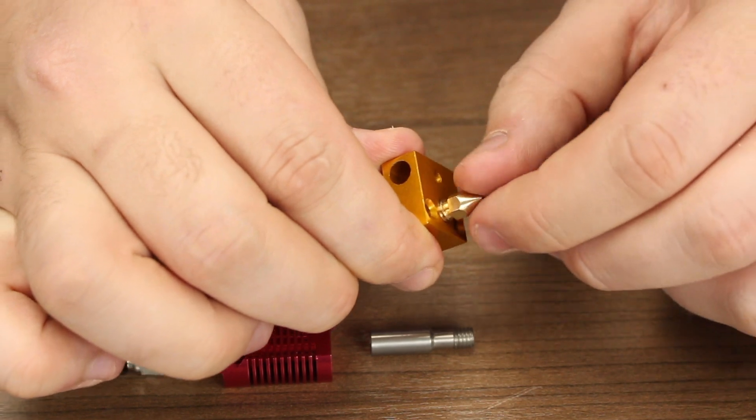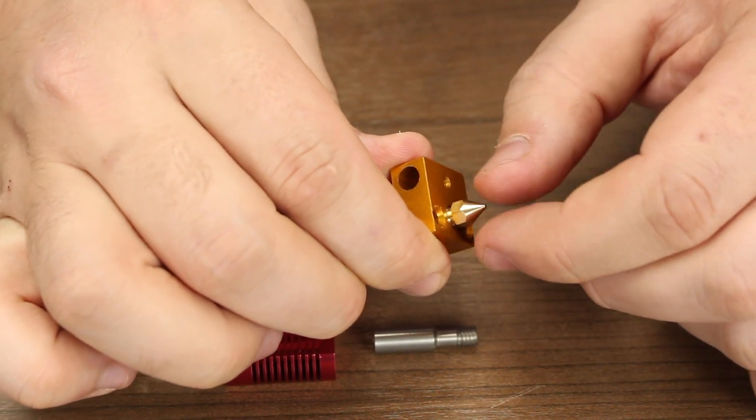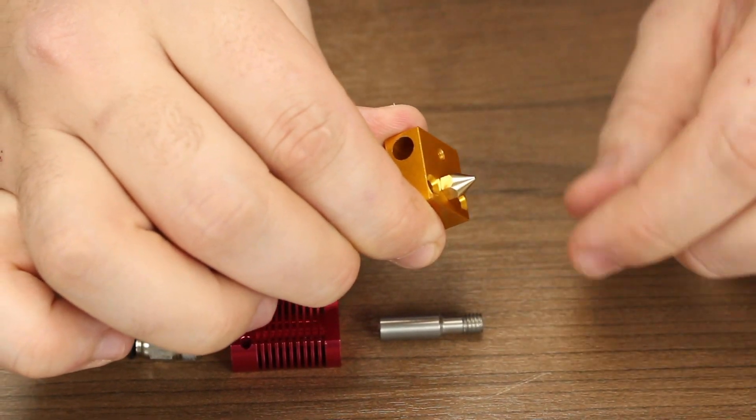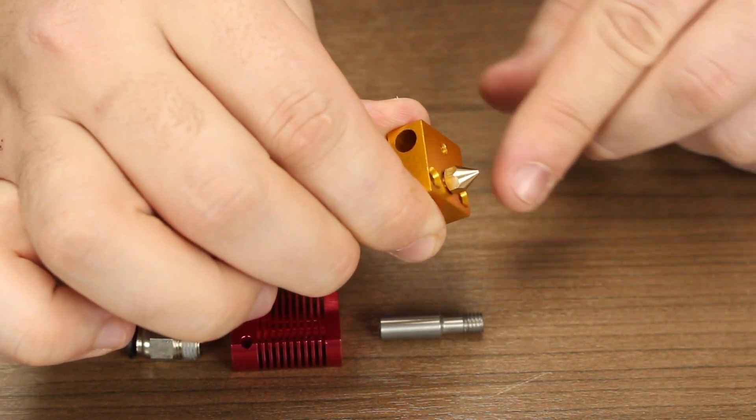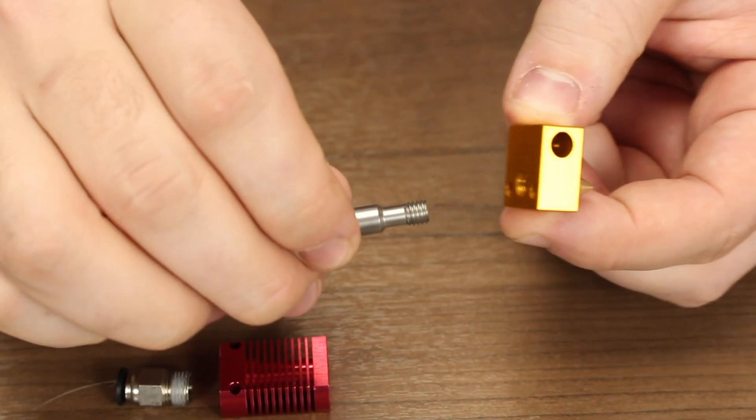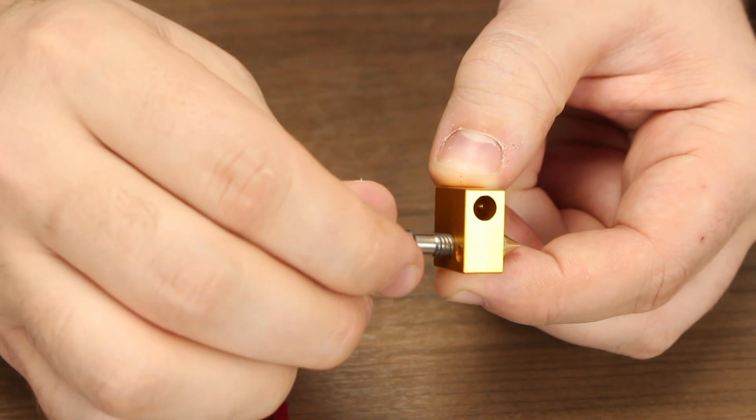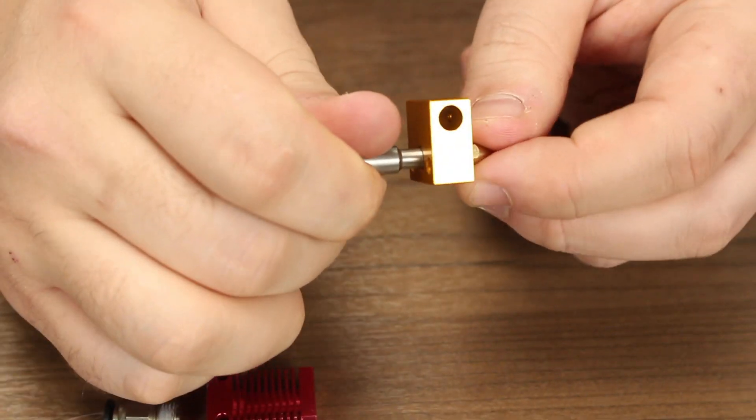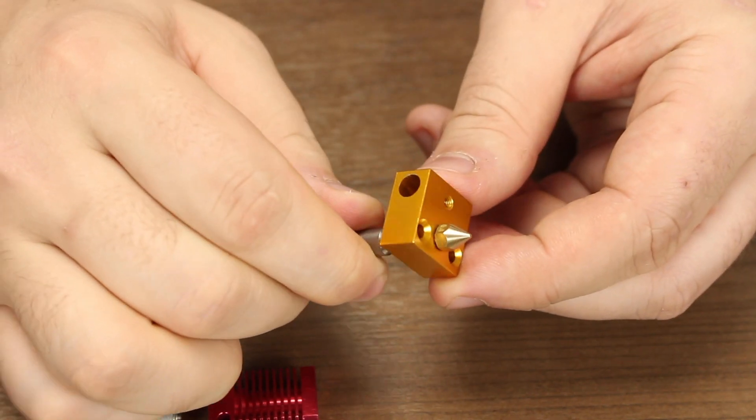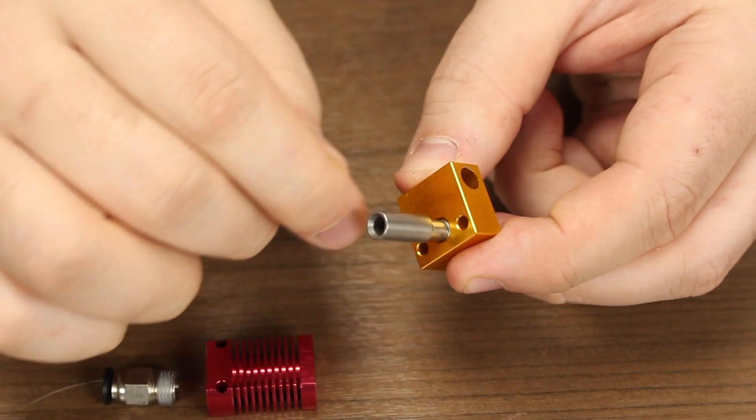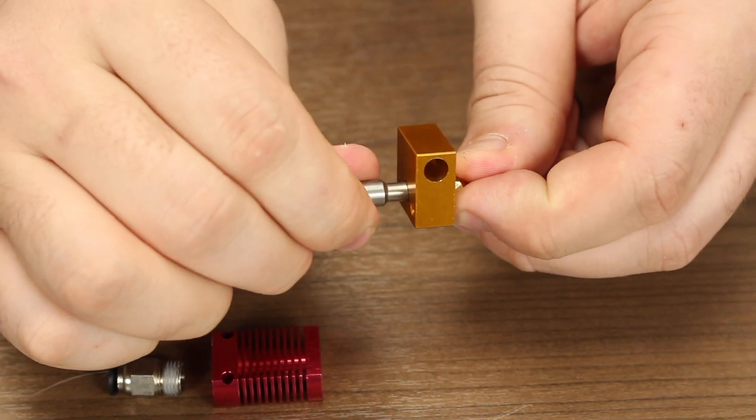The procedure to assemble this hot end is about the same as the E3D V6. We're going to put our nozzle on. Make sure that you don't tighten it all the way to the heat break. Leave about half a millimeter from the bottom. Next we're going to take our heat break and screw it in to meet the top of the nozzle. Make sure to double check that you have that half millimeter space still there. The threads of the heat break should be about flush with the top of the heat block.